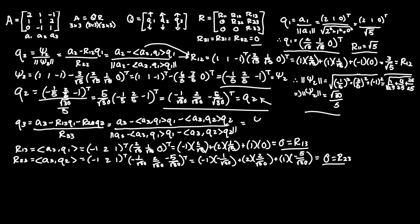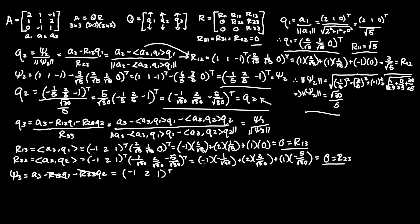Now we can find psi3, which is A3 minus R13*Q1 minus R23*Q2. Fortunately for us, R13 and R23 both equal 0, so we don't even need to worry about those terms. That just leaves us with A3, which is (-1, 2, 1) transposed. R33 is the magnitude of this, which is the square root of (-1)^2 plus 2^2 plus 1^2, giving us 1 plus 4 plus 1, or root 6.